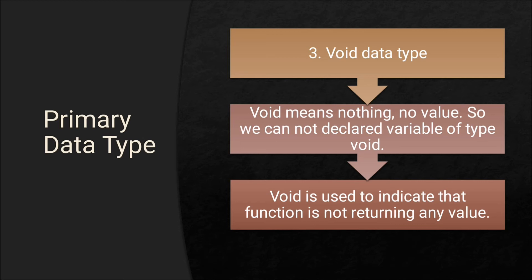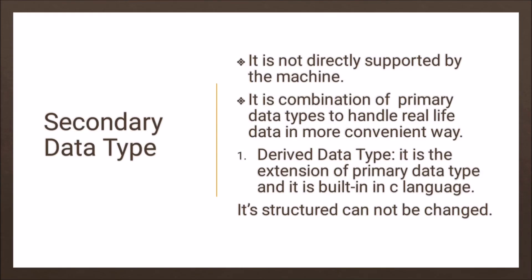The next type of primary data type is void. Void means nothing, no value — we cannot declare a variable of type void. Void is used to indicate that a function is not returning any value; where there is a requirement that a function does not return any value, then you use void data type. The next one is secondary data type — it is not directly supported by the machine, but it is the combination of primary data types to handle real-life data in a more convenient way, and it is not a built-in data type.